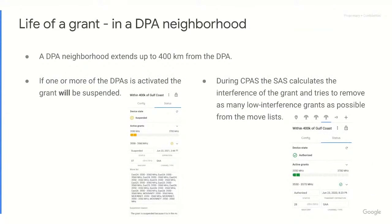The next bullet may seem obvious, but we fielded a lot of questions around what a 501 suspended grant due to a DPA activation means. It means that one or more of the DPAs for that grant has been activated and therefore the SASS had to suspend the grant in order to protect the incumbent. Last but not least, during CPAS the SASS will calculate interference for all CBSDs and grants on the incumbents, and in this example it will determine if that grant interferes with the DPA.